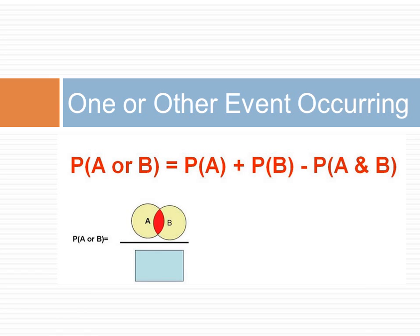In mathematical terms, the probability of A or B occurring is equal to the probability of A, plus the probability of B, minus the probability of the intersection of A and B occurring.